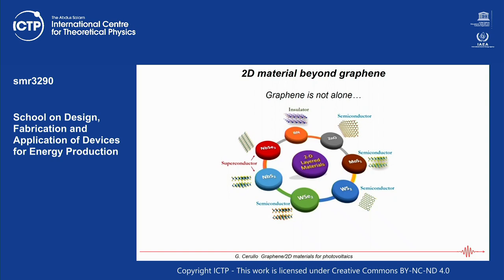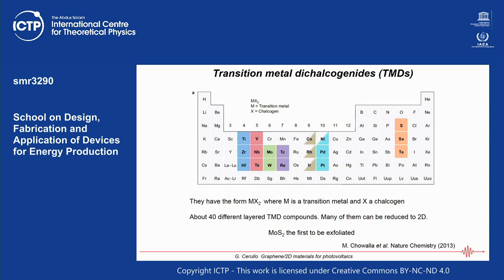The field is exploding with many materials that can be exfoliated and have different properties — some are semiconductors, some are insulators like boron nitride, and some are superconductors. I'm going to focus on semiconducting two-dimensional materials, specifically the class known as transition metal dichalcogenides. Looking at the periodic table, you combine transition metals M with chalcogen atoms like S, Se, or Te to get the chemical form MX₂, where M is a transition metal and X is a chalcogen.